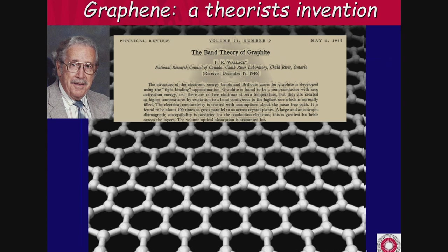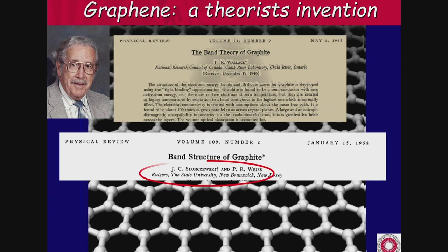So Wallace said: I can't solve graphite, let me solve a simpler problem — let me take one layer of graphite, which we now call graphene, and solve the band structure of that. And there he succeeded. It took another twelve years for a team from Rutgers to calculate the band structure of graphite. This graphene layer was pretty much forgotten over the decades. Every once in a while a theorist would pull it out of the drawer, dust it off, and make a curious model out of it.